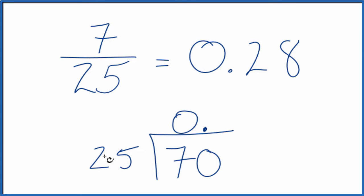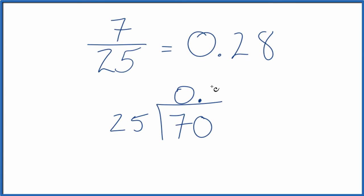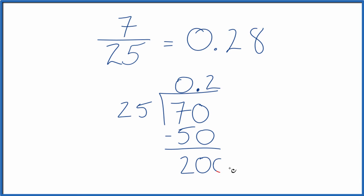Now 3 times 25, that's 75, that's too big. But 2 times 25 is 50. So if we subtract, we get 20, and let's call that 200. We can move over one more place here.